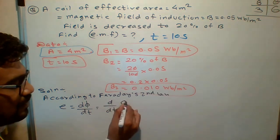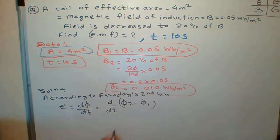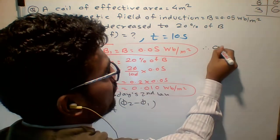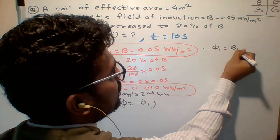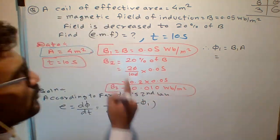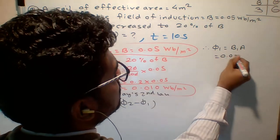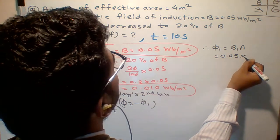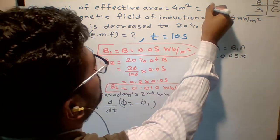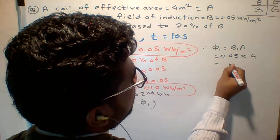We will find out φ1. What is φ1? B1 into A. What is B1? 0.05 multiplied by A. A is how much area? 4. The 4 times 5 is 20, so 0.20.